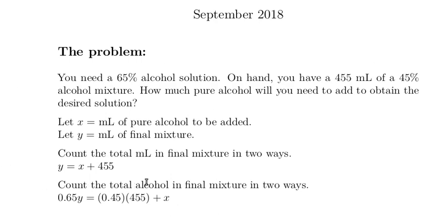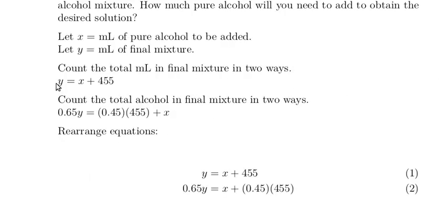There's a system of equations we need to solve. We need to find an x and a y that will make both equations true. Let's rearrange those two equations. y equals x plus 455, that's fine. Let's turn this around so the x's line up and the y's line up.